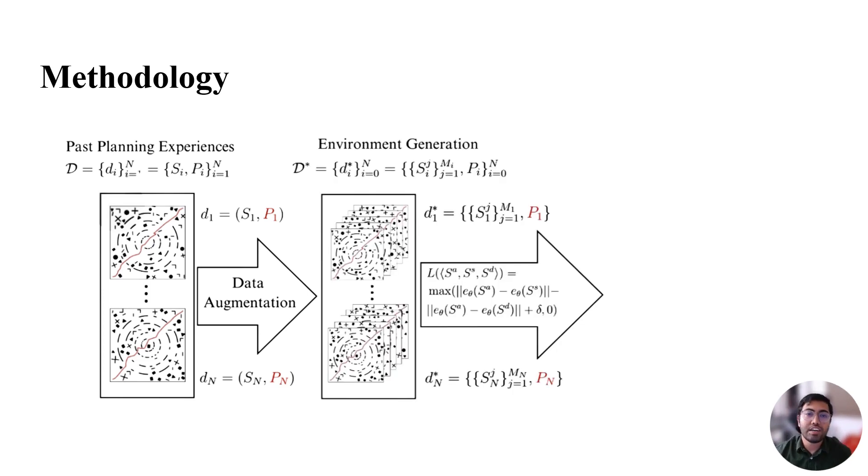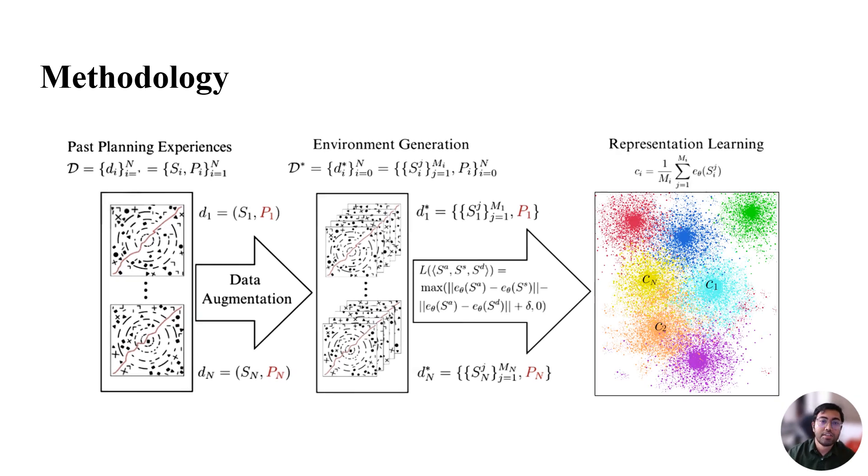Thus, the original dataset D is augmented to capital D star, in which each past planning solution Pi is no longer only paired with one original planning problem Si, but a set of Mi planning problems for which Pi is optimal. Such an augmented dataset is used to learn a large and efficient latent representation space.